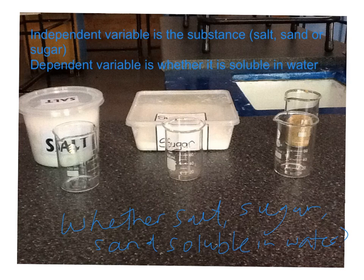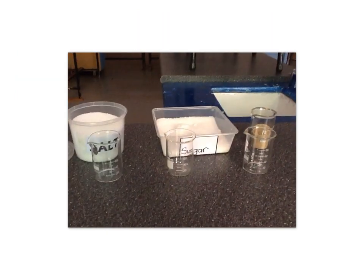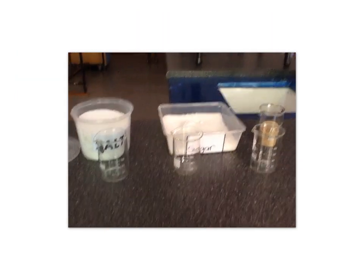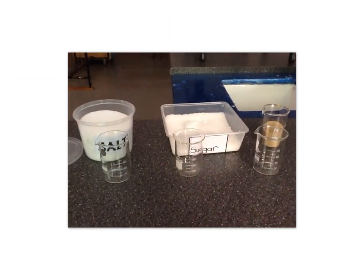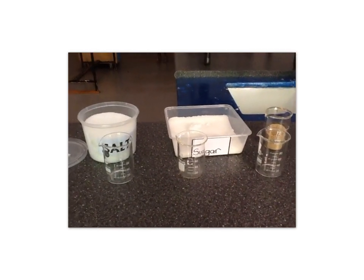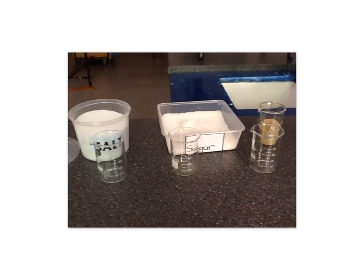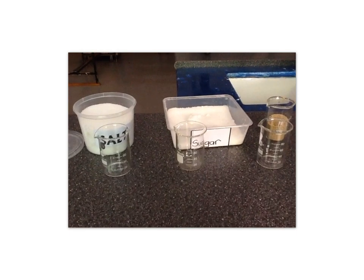Now, the controlled variables are all the things we are going to need to keep the same. Can you think of what they would be? For this experiment, you could write down all the controlled variables in your books. Some things we need to keep the same in order for this to be a fair test.